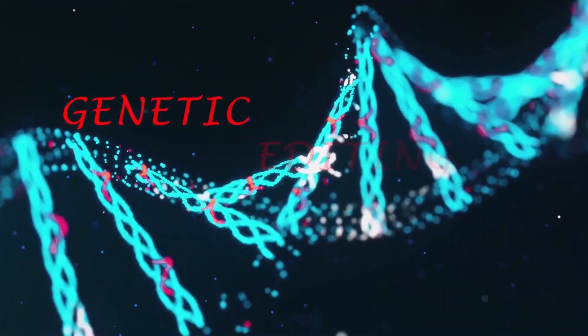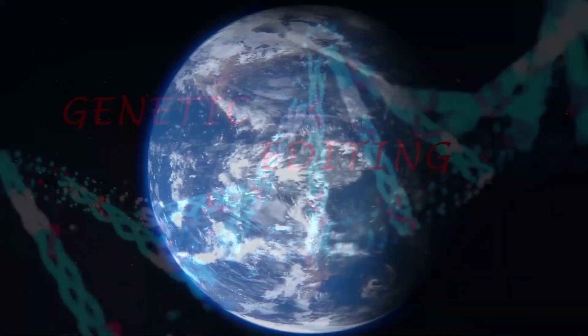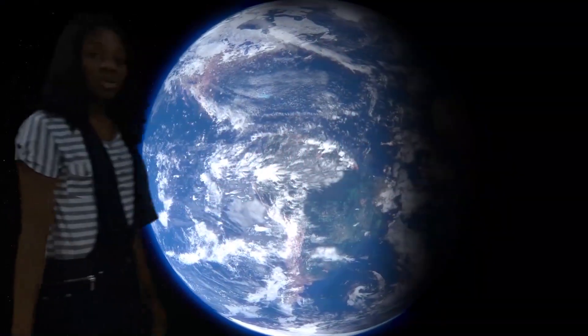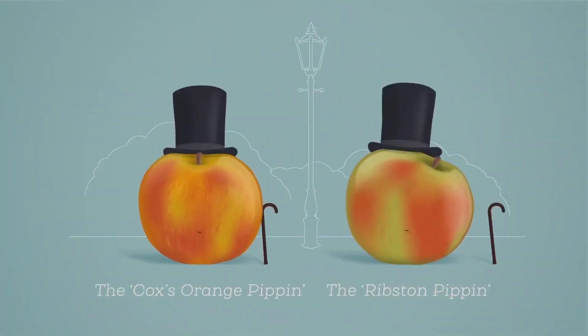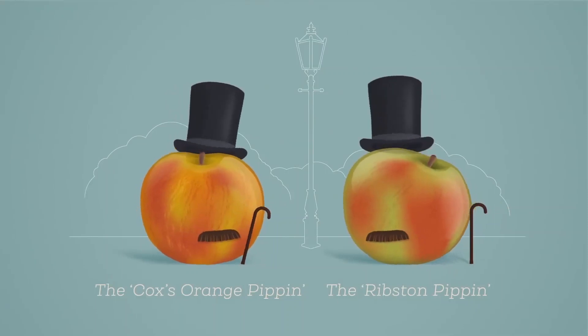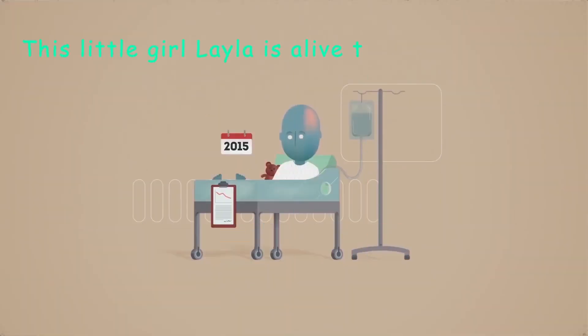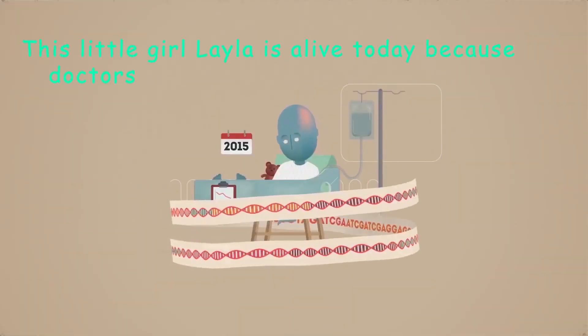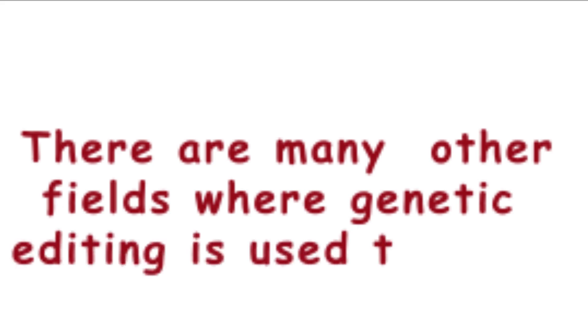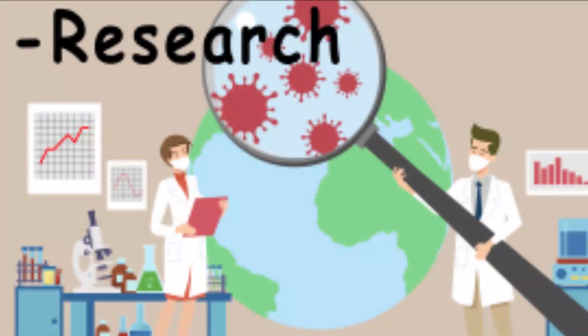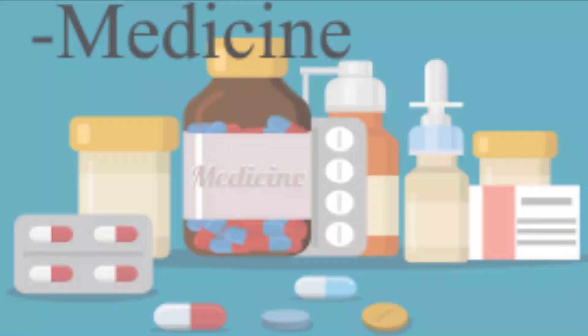Which brings us to the topic for today: genetic editing. So what in the world is gene editing? Genetic editing is the process of altering the genetic code of one or more organisms to produce desired traits. For example, in 2015, doctors used genetic editing techniques to cure a baby girl's leukemia. There are many other fields where genetic editing is used today, like in food, research, and medicine.